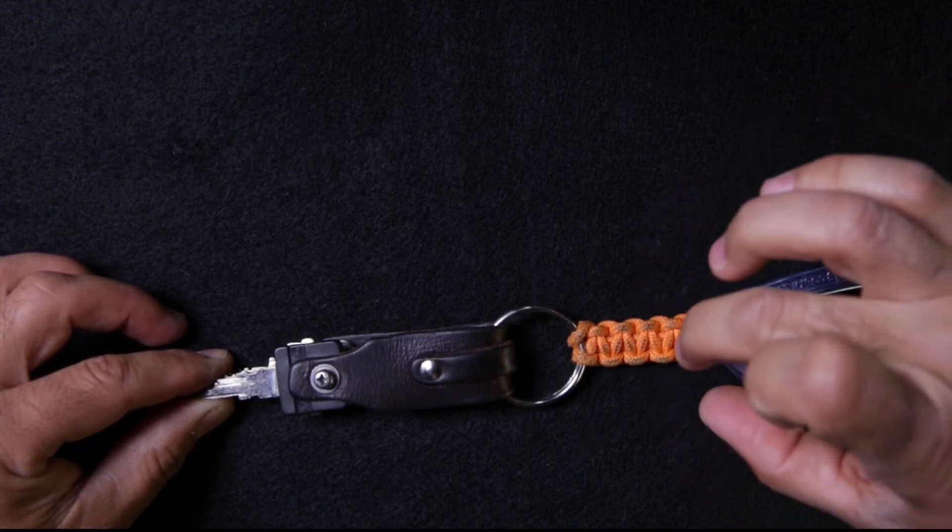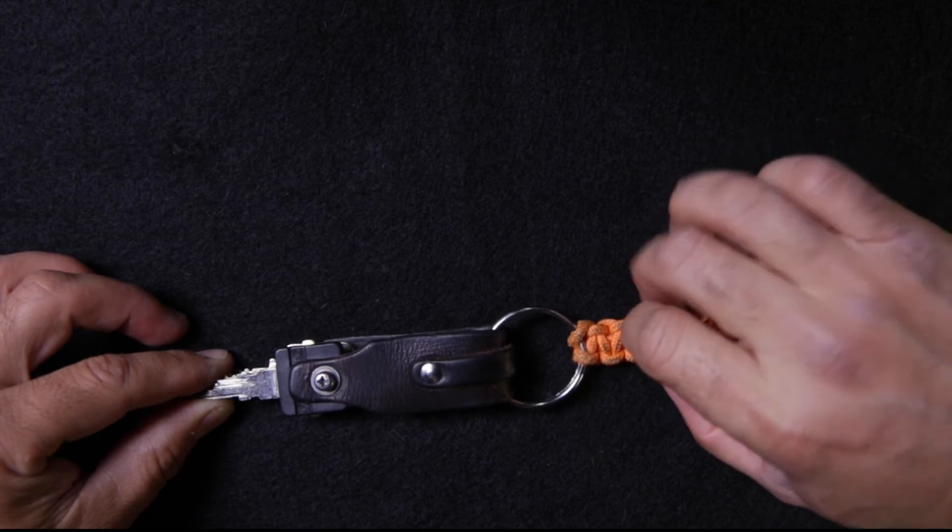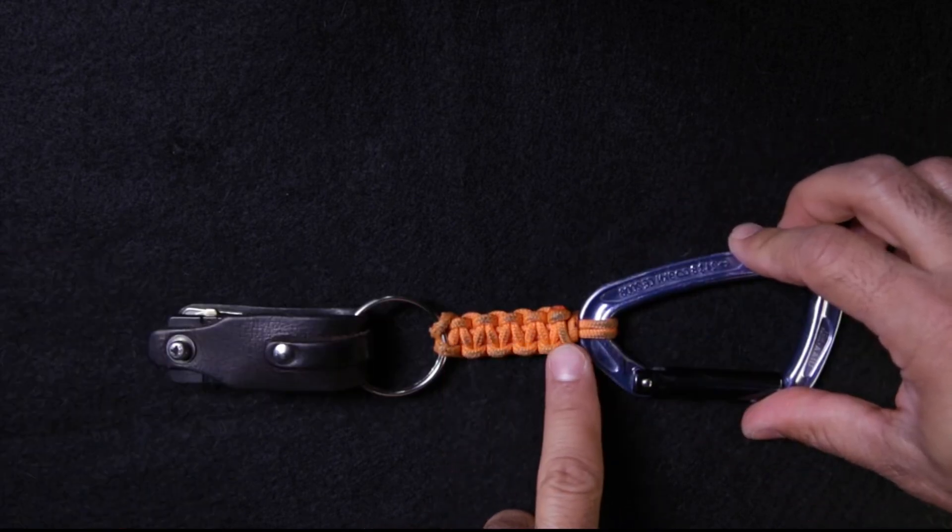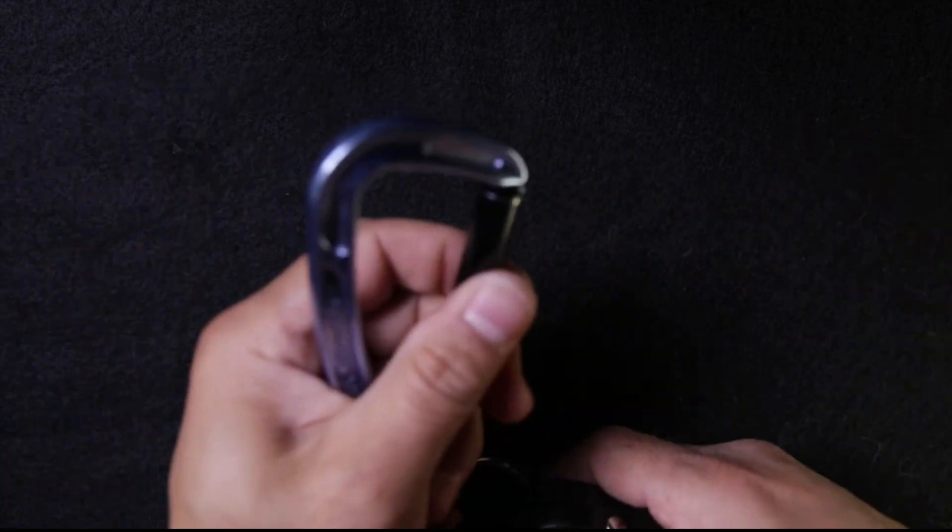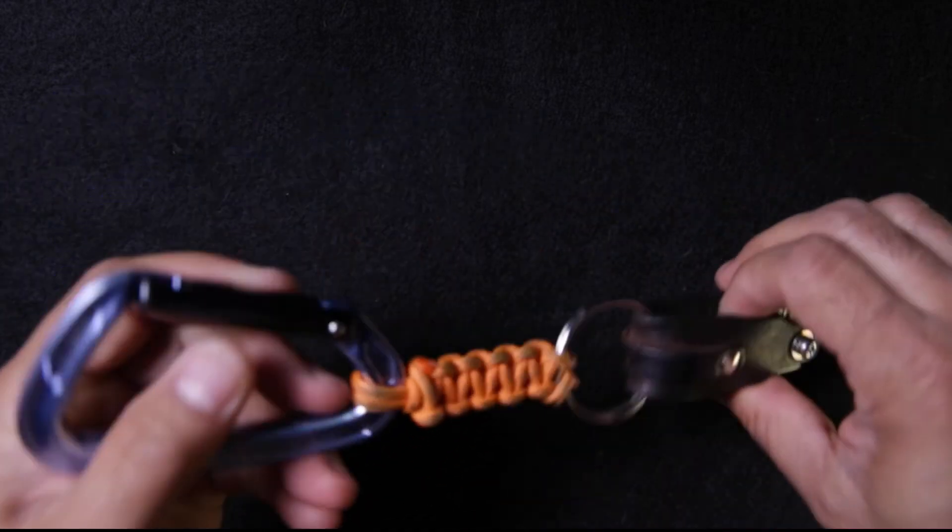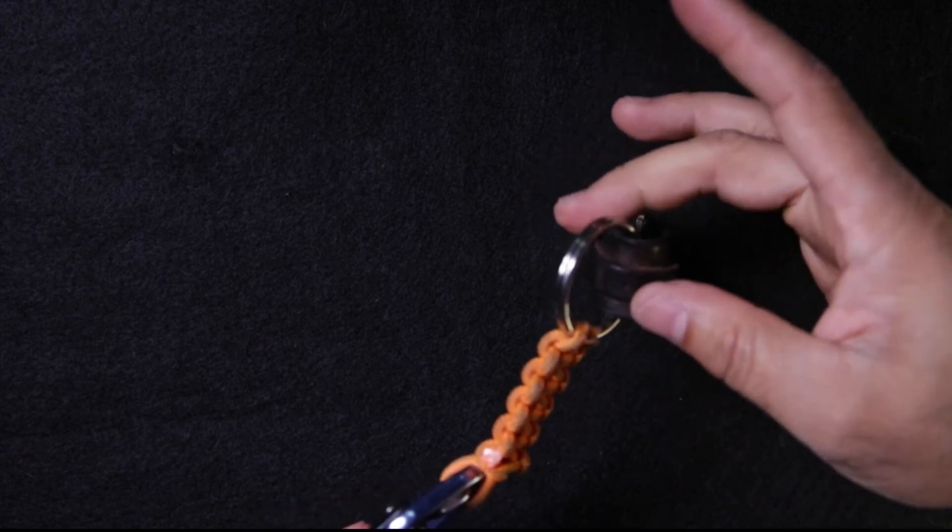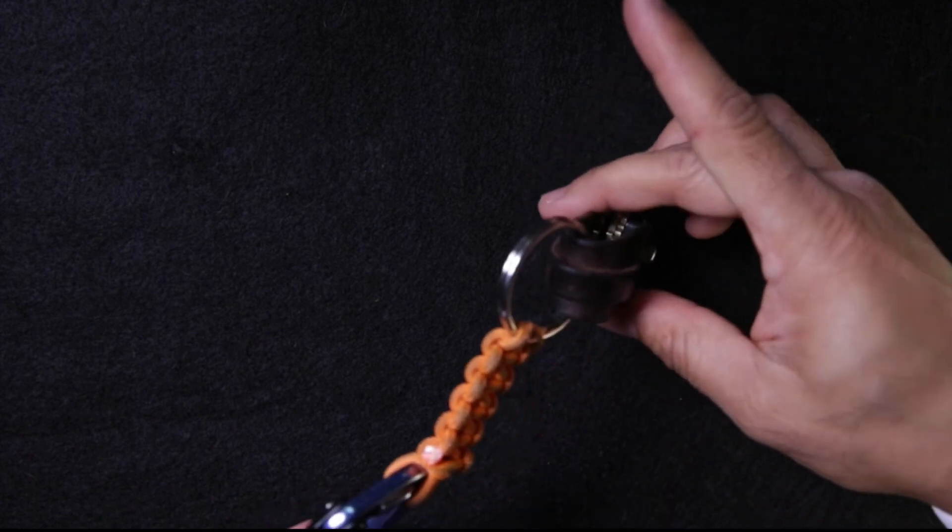This length is essentially when I snap it on one of my belt loops, this length allows me to snake the key fob part into my front or back pocket so it's not jangling around.